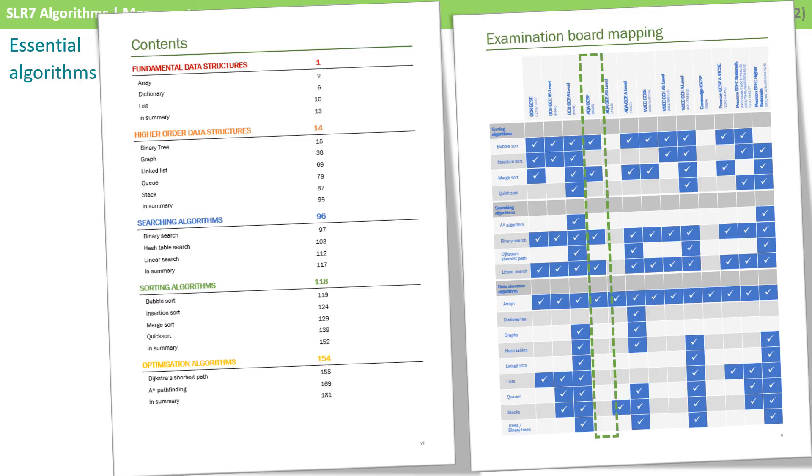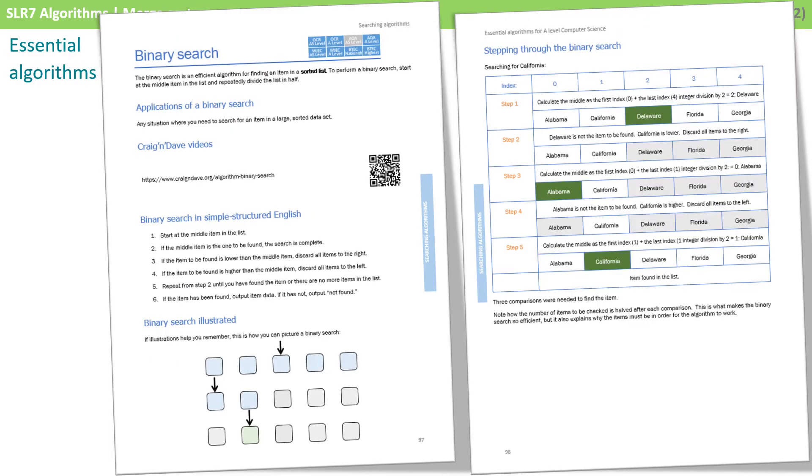This book would be perfectly appropriate for you to use and also to take onto A-level should you choose to carry on studying the subject. Every chapter is presented in the same way. We introduce the algorithm from a high-level perspective and provide a link to our videos. We then layout the algorithm in simple structured English so you can get your head around it. We illustrate the algorithm in the form of a diagram and then provide an example of stepping through it.